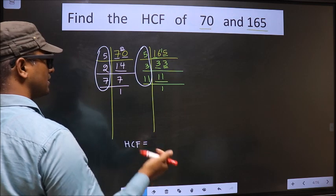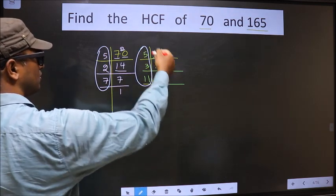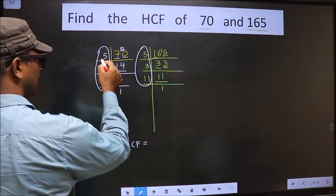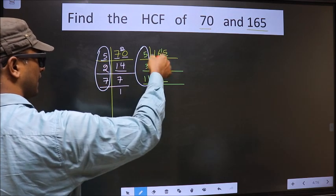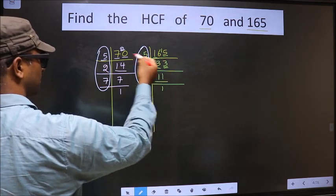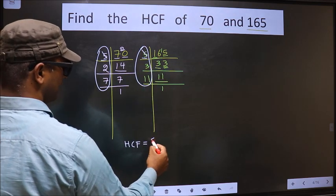Now let us find the numbers present here and also here. Starting with the number 5, do we have 5 here? Yes, so you cut 5 right here.